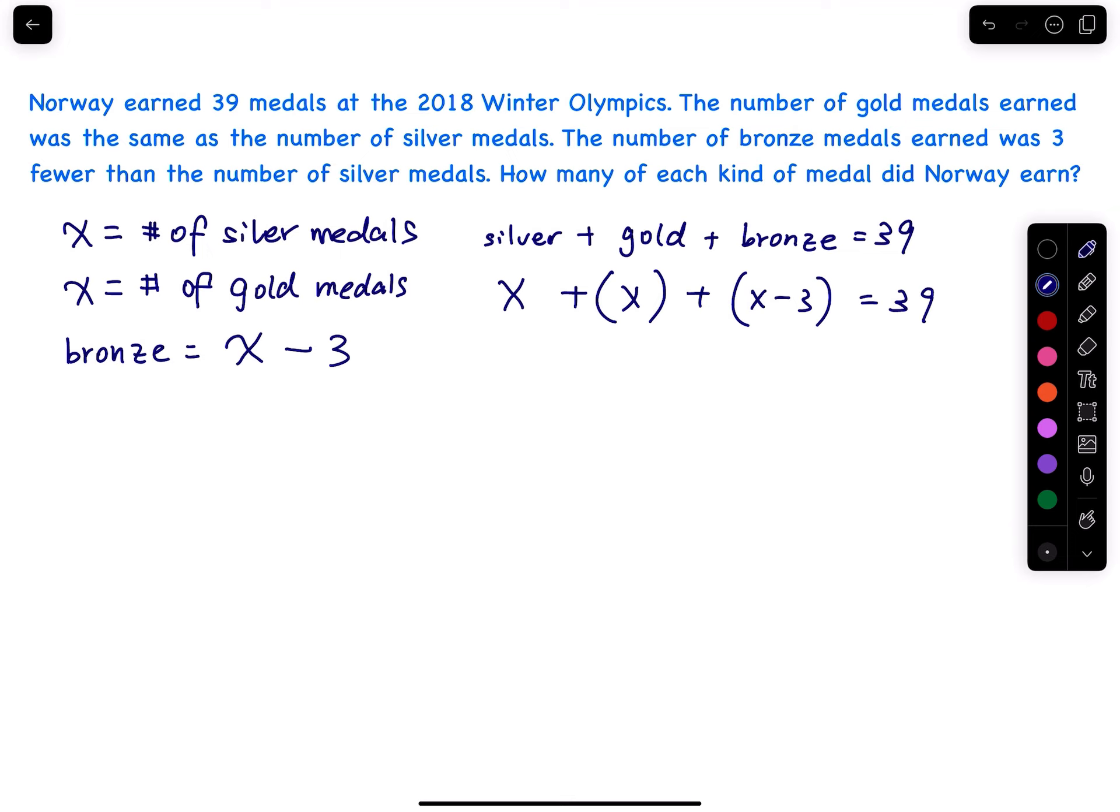I prefer to let the equation look that way. So x plus x plus x, that is equal to 3x. Then you just subtract 3. This equals 39, and then you add 3 on both sides.